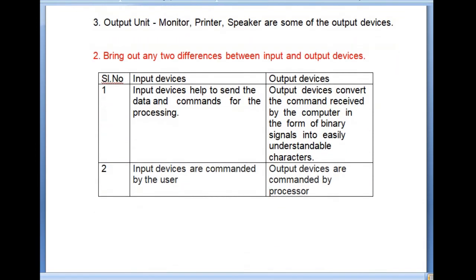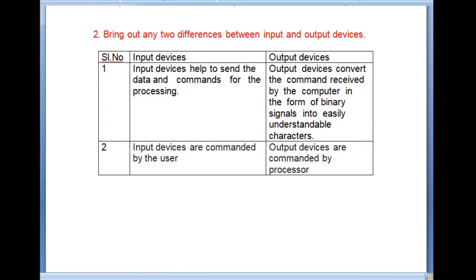Coming to question number two: bring out any two differences between input and output devices. Number one: input devices help to send data and commands for processing, whereas output devices convert the commands received by the computer in the form of binary signals into easily understandable characters. Number two: input devices are commanded by the user, whereas output devices are commanded by processes.